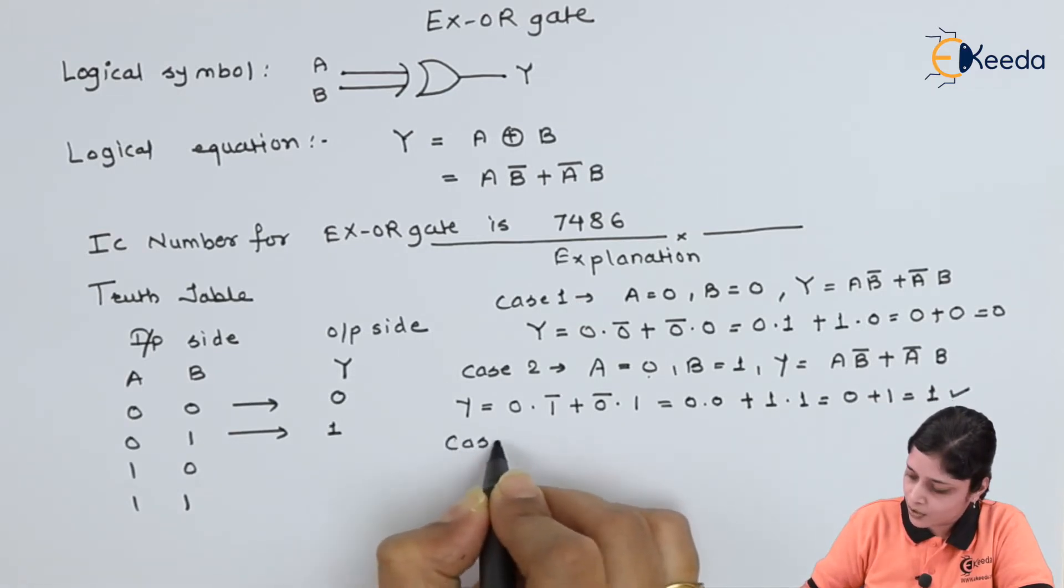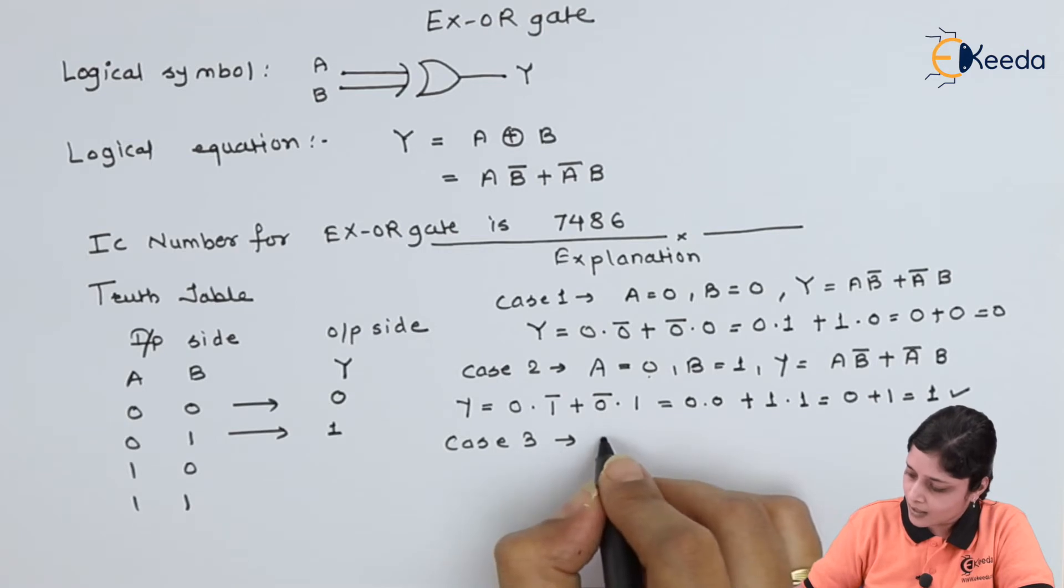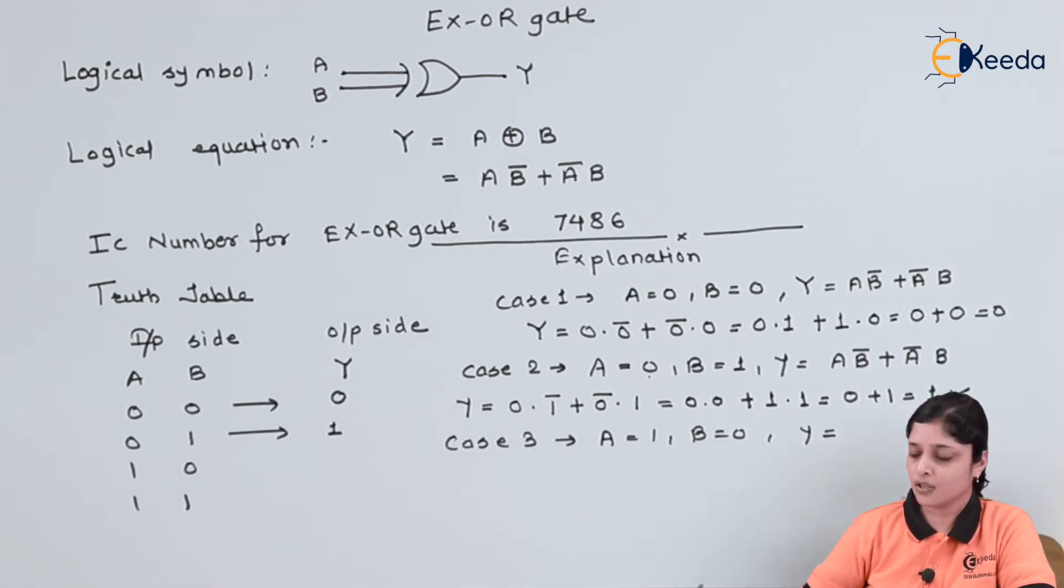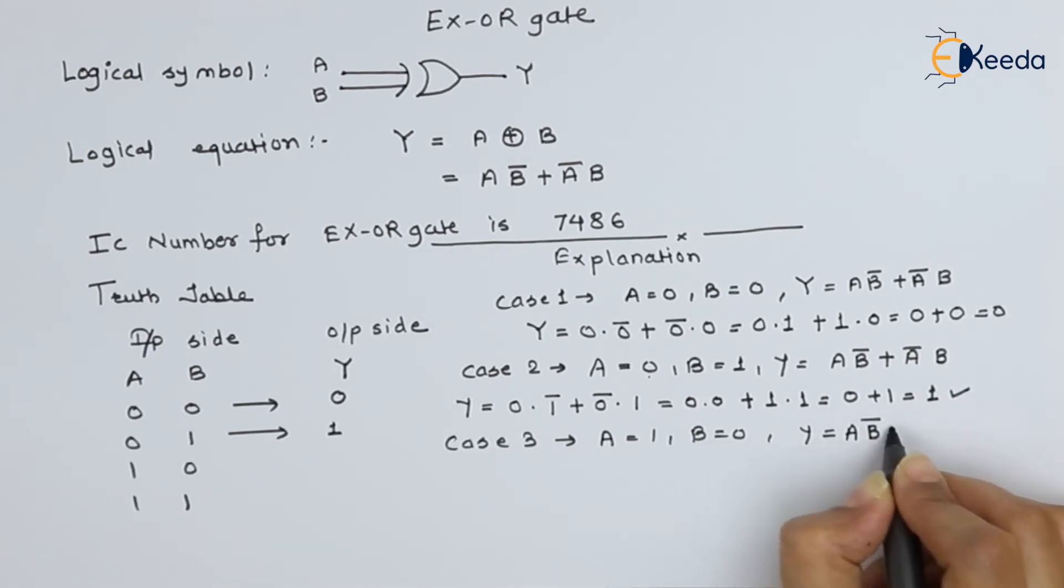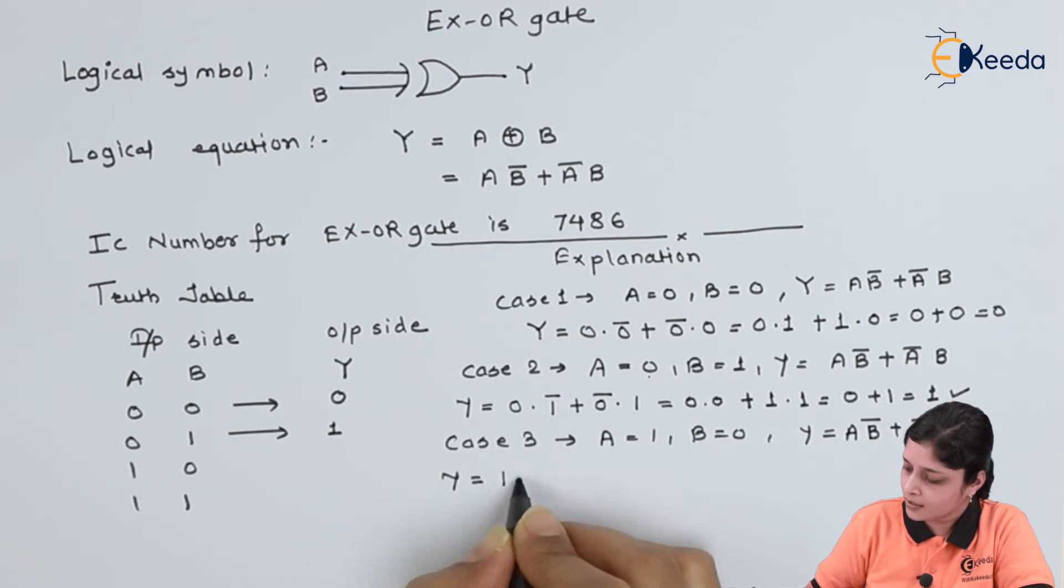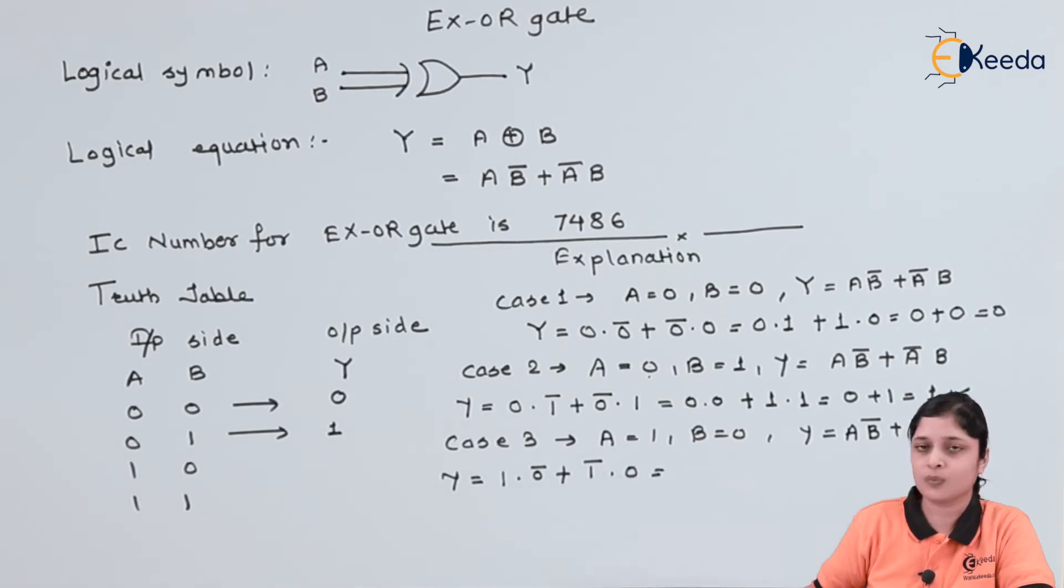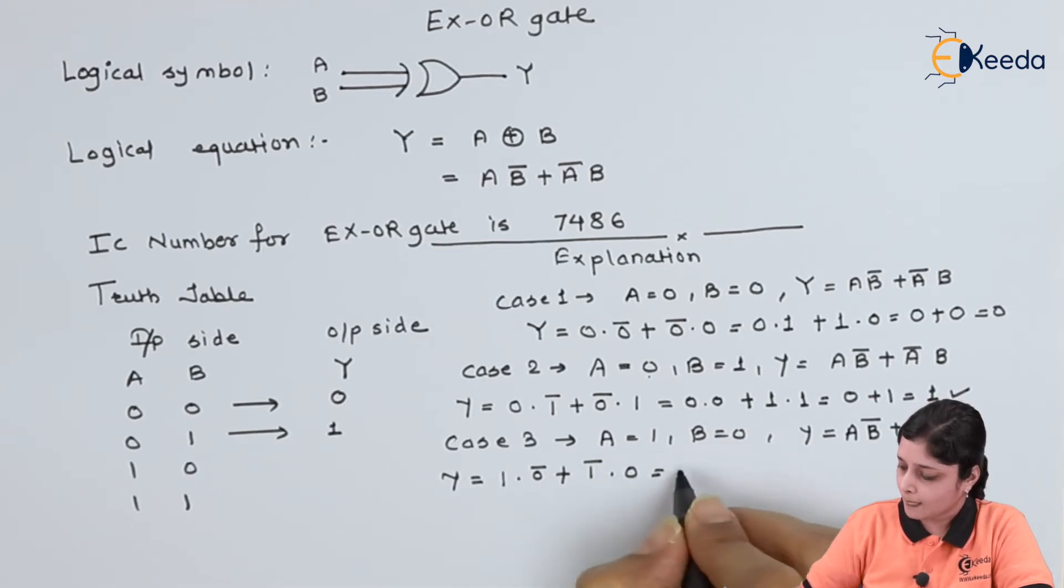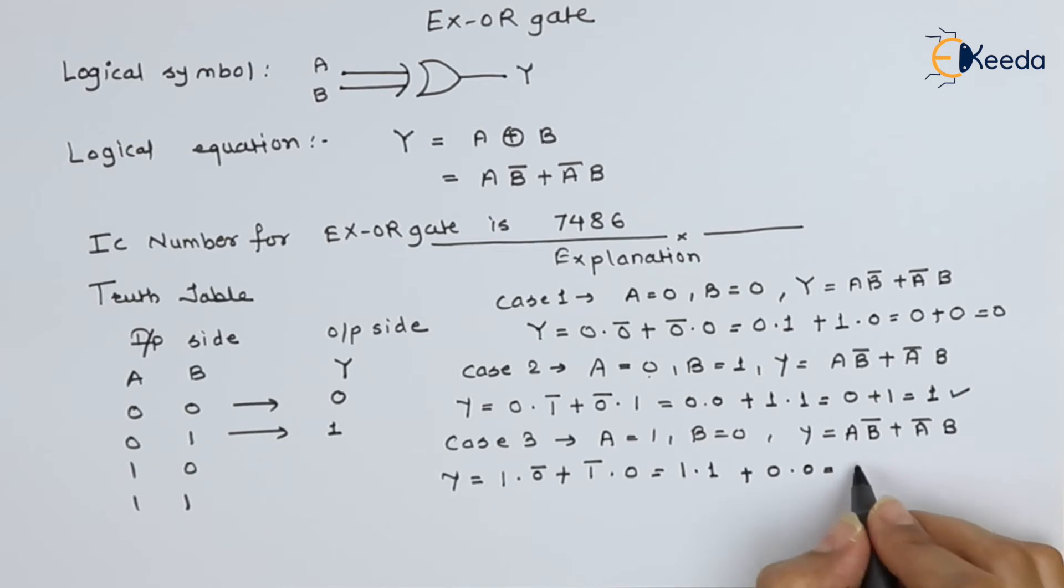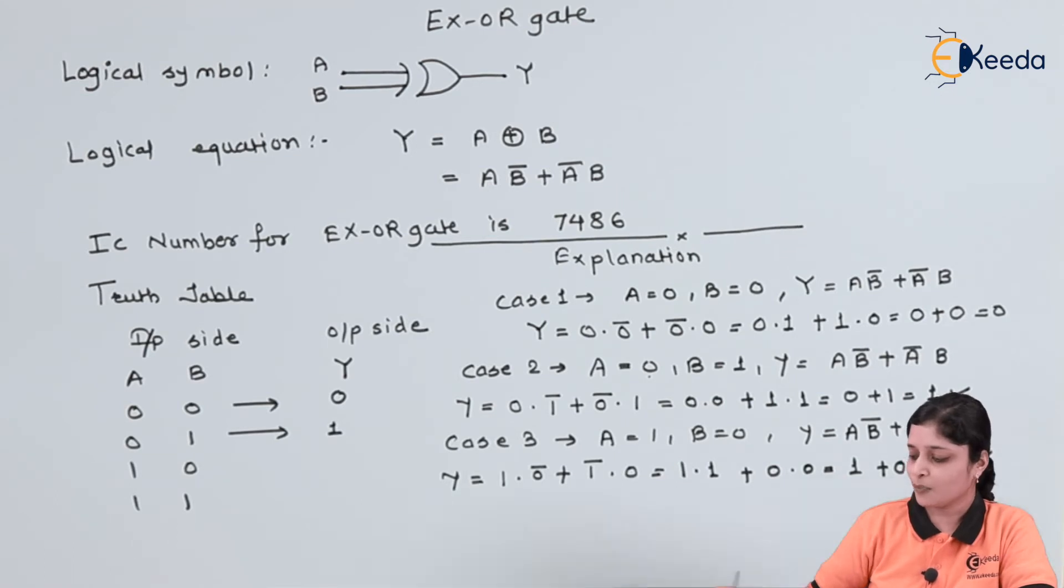Now, we will focus on case 3. A equals to 1. B equals to 0. Logical equation you should write down. So, A B bar plus A bar B. Y equals to 1 dot 0 bar plus 1 bar dot 0. Now, solve the logical equation 1 dot 0 bar is 1 plus 1 complement is 0 dot 0. 1 dot 1 is 1 plus 0 will give you 1. This is the output for case 3.